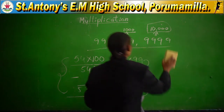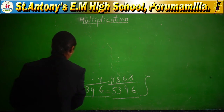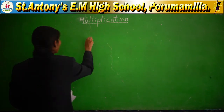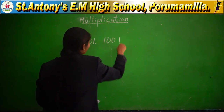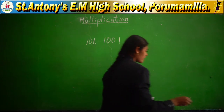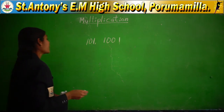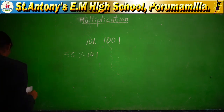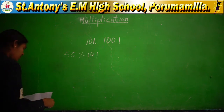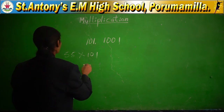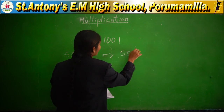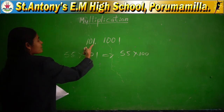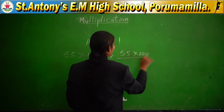Multiplying by 101 or 1001 — these are also short methods. Take 55 into 101. The number just before 101 is 100, so first do 55 into 100: 55 ones are 55, write two zeros giving 5,500.